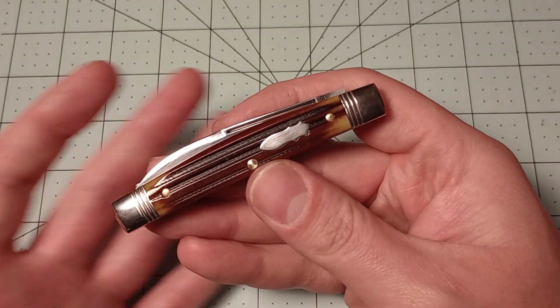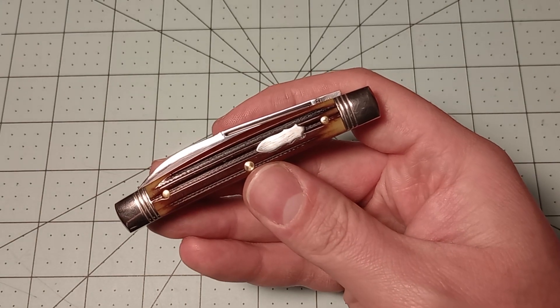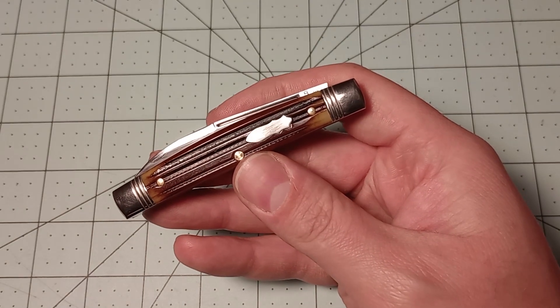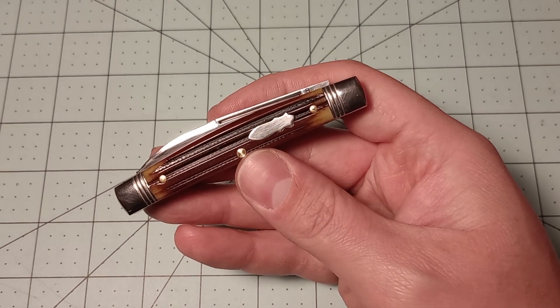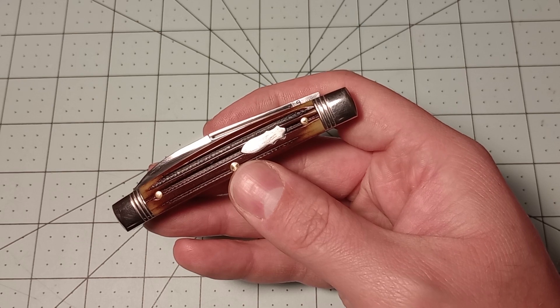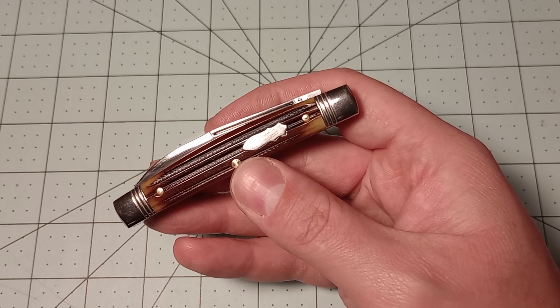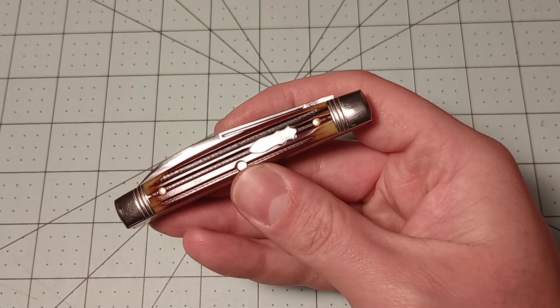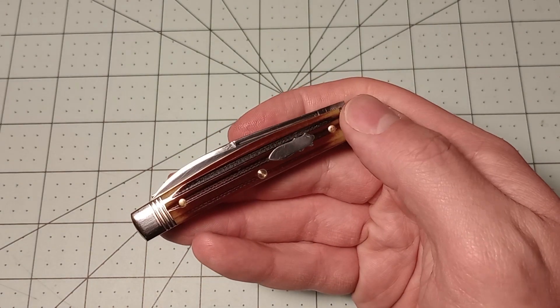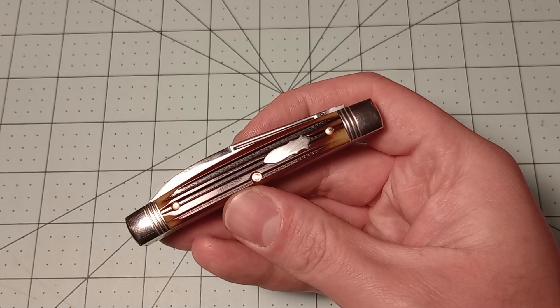But if you're somebody like me who just buys these to throw them in their pocket and carry them and everything, the only downside of an S knife in that case is if something happens to it, I don't think Great Eastern Cutlery will fix it. I know they won't warranty it. But even if you want to pay them, I'm not sure if they'll fix it. I don't exactly know how that works.